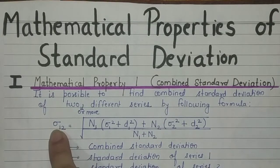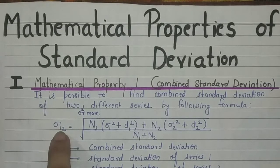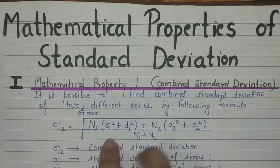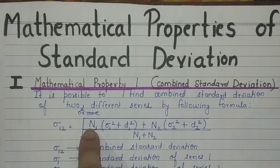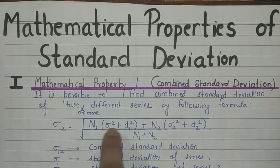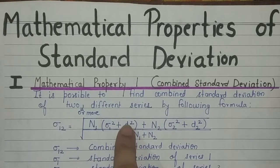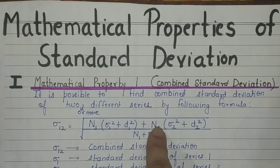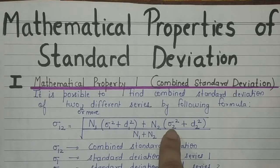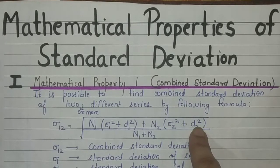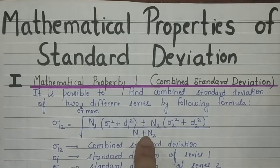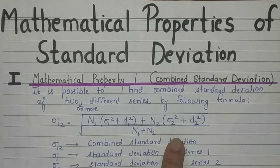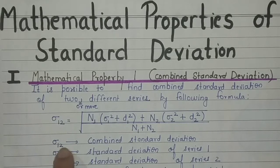The combined standard deviation is represented by the symbol σ₁₂. It is the square root of: in the numerator, the addition of two things — n1 multiplied by the sum of standard deviation squared of series 1 and d1 squared, plus n2 multiplied by the sum of standard deviation squared of series 2 and d2 squared — and in the denominator, the total number of observations in both series, that is n1 plus n2.